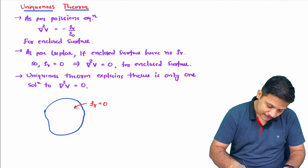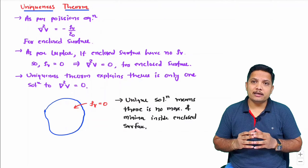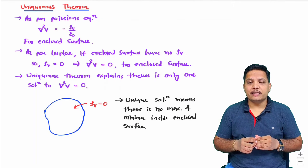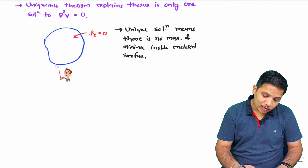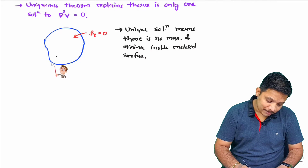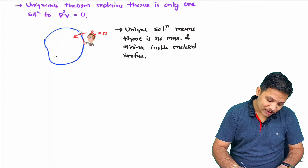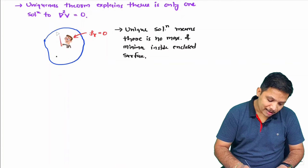Let me give one more analogy. For the enclosed surface, if I have a reference point inside, then a maxima can be somewhere closer and a minima somewhere farther. But since rho_v equals 0, we don't have a reference inside. If you don't have a reference, then you cannot have maxima and minima in the entire enclosed surface.